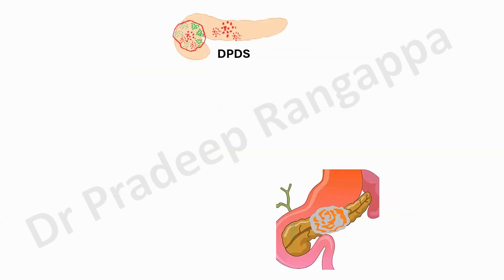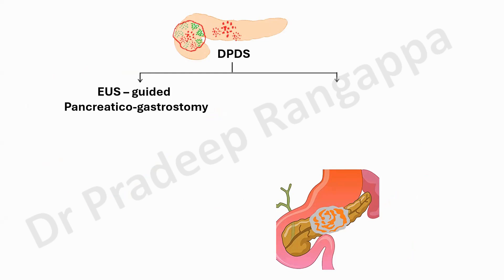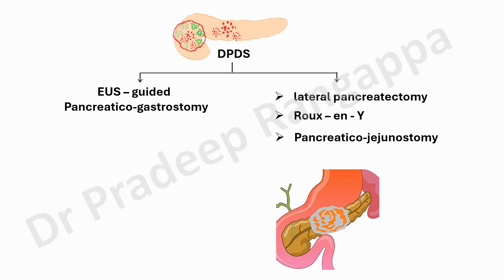There is a nomenclature called disconnected pancreatic duct syndrome, where there is discontinuity of the pancreatic duct — the pancreatic duct continuum is disrupted due to extensive inflammation, as seen in this image. If there is disconnected pancreatic duct syndrome, the suggestion is endoscopic ultrasound-guided pancreaticogastrostomy. If that is not helpful and the condition is refractory, one has to resort to surgical intervention: lateral pancreatectomy, Roux-en-Y, or pancreaticojejunostomy.